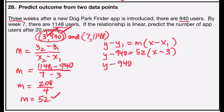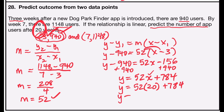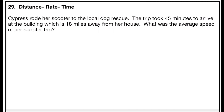Simplifying: y − 940 = 52x − 156. Adding 940 to both sides: y = 52x + 784. To predict users after 20 weeks, substitute x = 20: 52 × 20 = 1040, then 1040 + 784 = 1824. After 20 weeks, there will be 1824 app users.